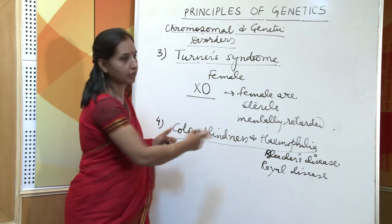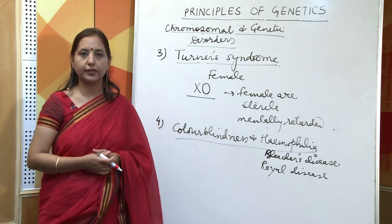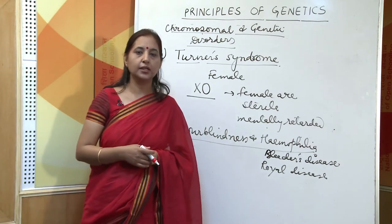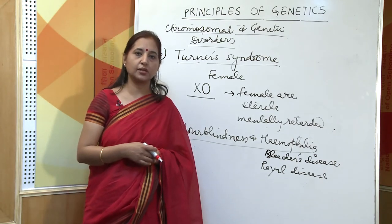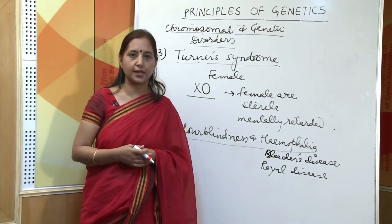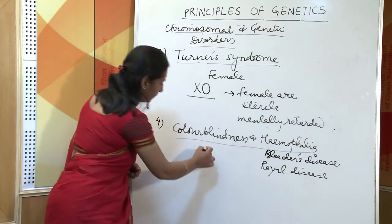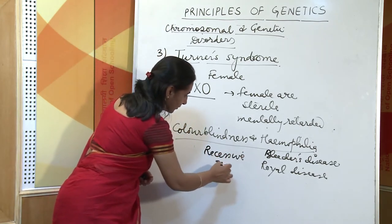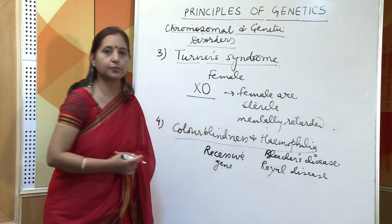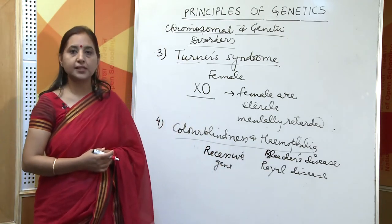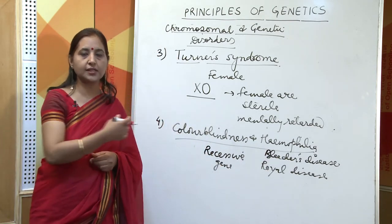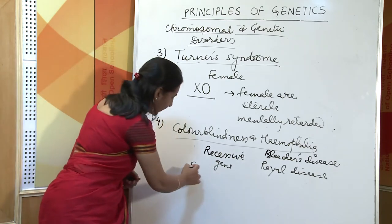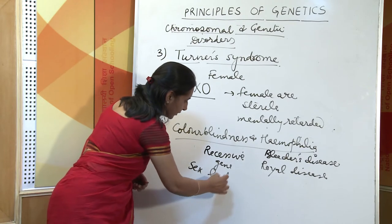Both these disorders are caused by a defective gene which is recessive. A recessive gene is one which is not able to express itself in the first generation. Since this gene is located on the sex chromosome, it is also called a sex-linked disorder.